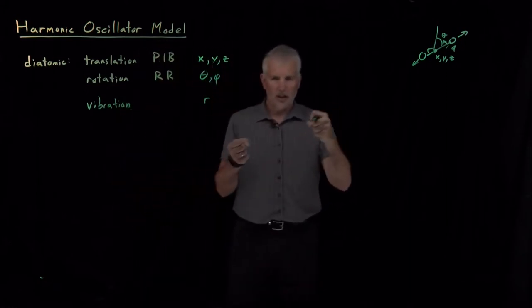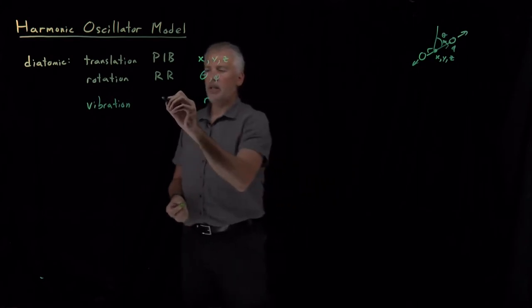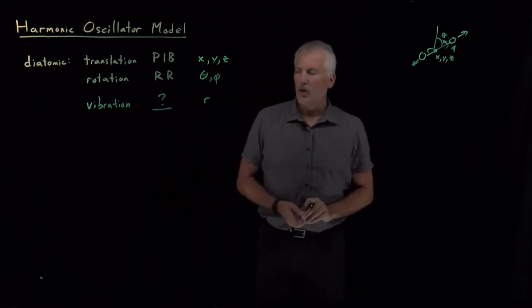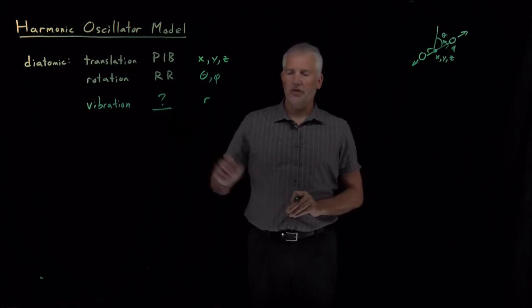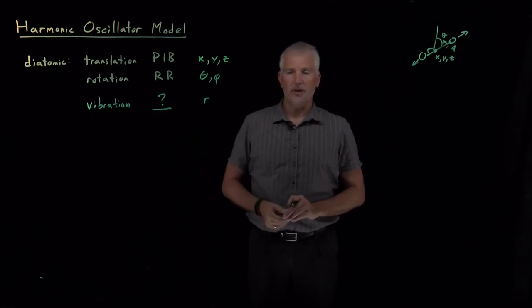The bond length is the variable we need to use to describe the vibration of the molecule. As the molecule's bond length changes, we call that motion of vibration, and we need to understand how to quantum mechanically describe the states of the molecule and eventually the thermodynamic properties of the molecule due to those vibrations. That's the next thing we'll tackle.